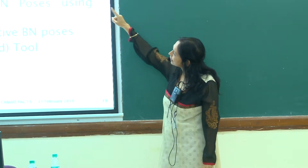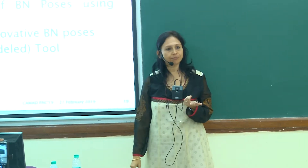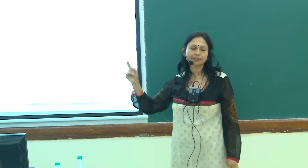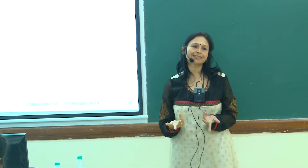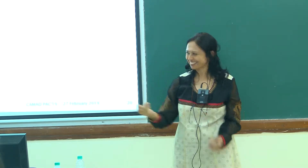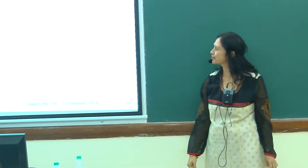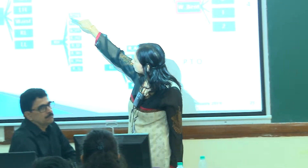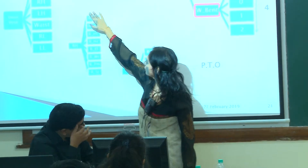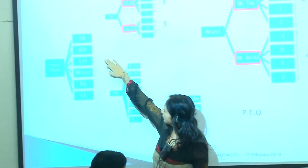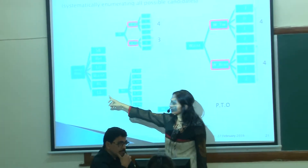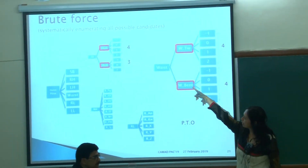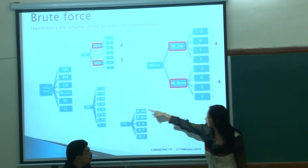After that, the next step was to generate innovative poses. The first obvious approach is the brute force method. We have the dance poses and six limbs: the Shirobheda, the right hand, the left hand, waist, right leg, and left leg. I have shown how many positions are available for each.